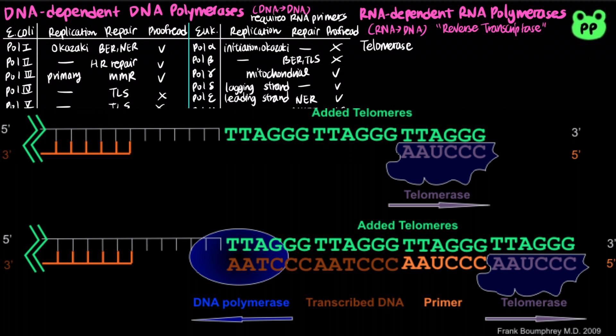Telomerases are a type of reverse transcriptase that synthesizes repeated sequences of DNA repeats in order to protect chromosomes from progressive shortening of the 3 prime end during replication.